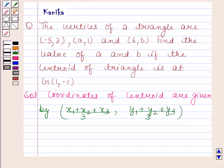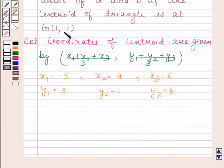Now here in this question we have the vertices of the triangle as (-5,3), (a,1), and (6,b). So this means x1=-5, y1=3, x2=a, y2=1, x3=6, and y3=b. Coordinates of the centroid are (1,-1), that means x=1 and y=-1.